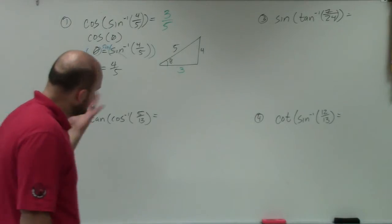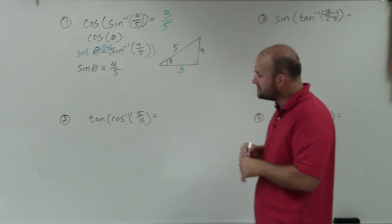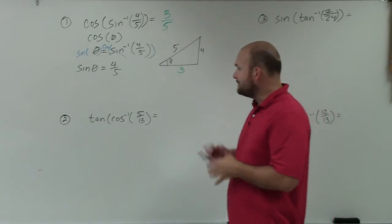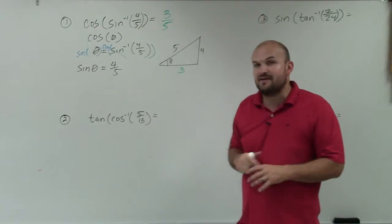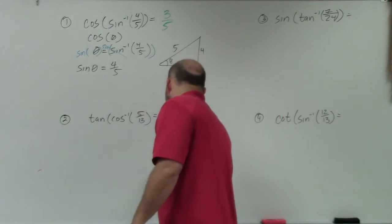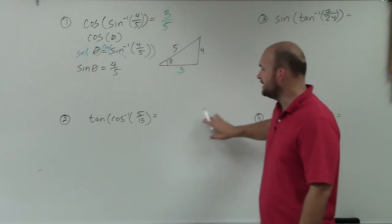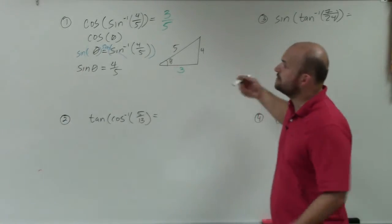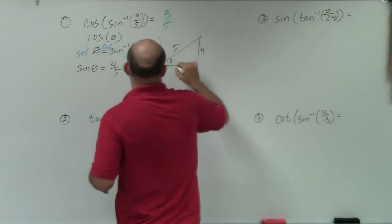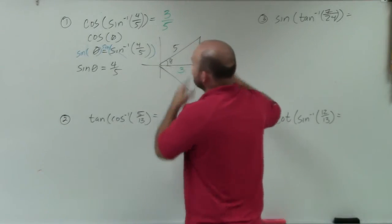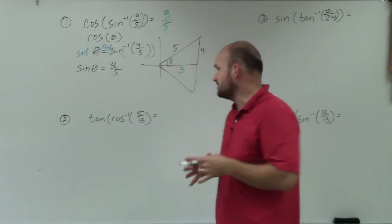Let's do example two. We're asked for the tangent of theta, where theta equals the cosine inverse of 5/13. We want to create a triangle where the inverse cosine is 5 over 13. Since cosine is positive, the inverse cosine is positive. I should mention: when talking about the range, that's why I chose this triangle oriented this way — it could be reflected if the value were negative, but since it's positive, I used an upright triangle.